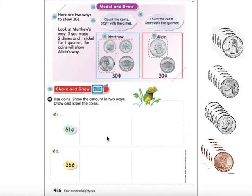So down here we're going to think of two ways to show 61 cents. If I'm thinking of my coins, I'm already thinking about my big coins that I can get closer to 60. So what coin would I use to get to 60 cents? A quarter. One quarter is worth 25 cents. What would be my next coin?